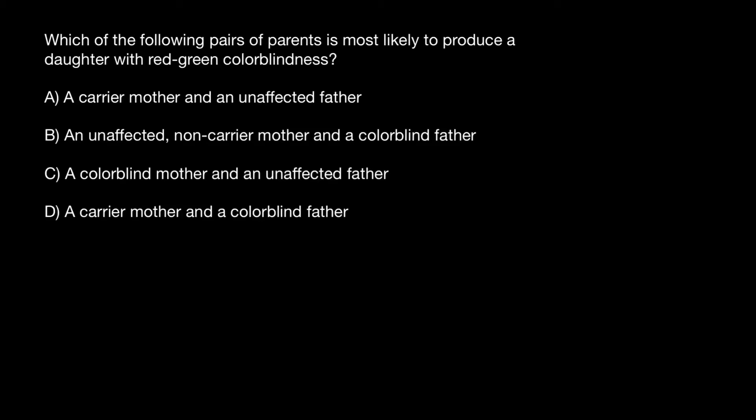Hello and welcome to Nikolai's Genetics License. Today's problem is: which of the following pairs of parents is most likely to produce a daughter with red-green colorblindness? Red-green colorblindness is an X-linked recessive genetic disorder.